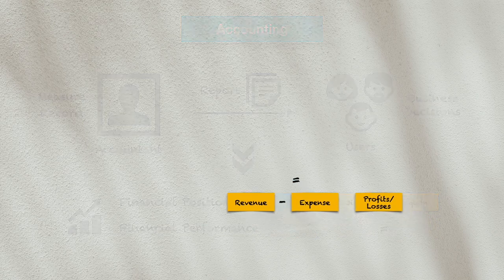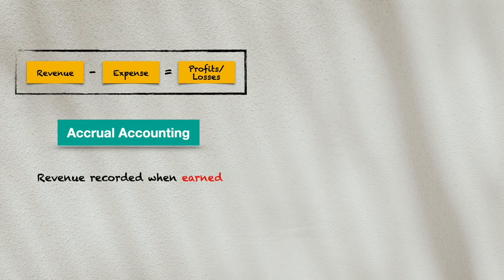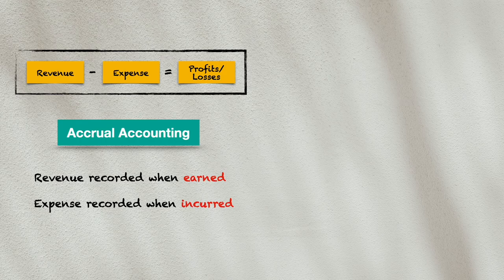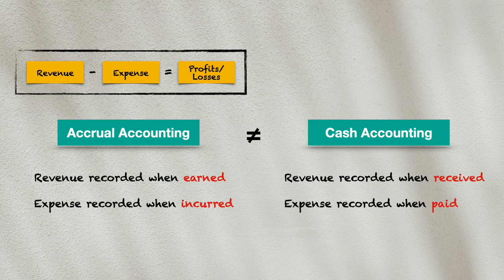In considering when we should record revenue and expenses, we follow the accrual accounting principle. This principle states that revenue is recorded when it is earned — that is, when the revenue-generating process is completed, for example when a service is completed or when goods are delivered to a customer. Expenses are recorded when incurred, or when resources are used up or consumed to generate the revenue. The accrual accounting principle is not the same as cash accounting, where revenues are recorded when cash is received and expenses are recorded when cash is paid.